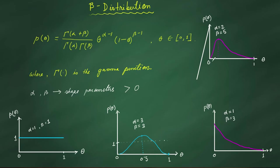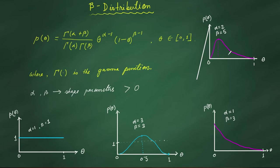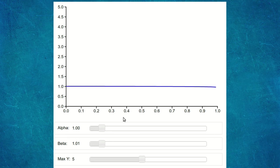This probability distribution is useful in Thompson Sampling because we'll be continuously estimating the alpha and beta values for each bandit's Q-value distribution. As we get more and more samples from the bandit or slot machine, we'll shift this distribution by changing alpha and beta values so that we move towards a more and more accurate distribution of the Q value.